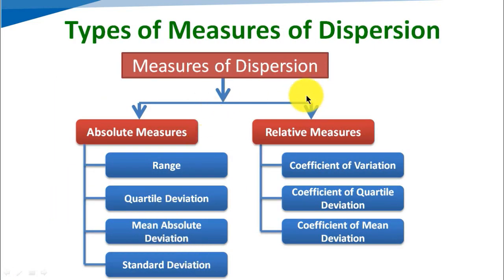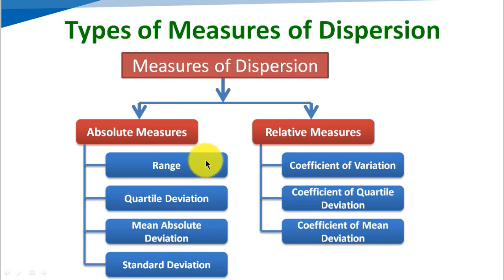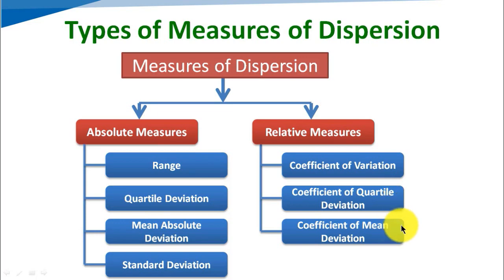Now, measure of dispersion can be divided into two types: absolute measures and relative measures. Absolute measures include range, qualitative deviation, mean absolute deviation, and standard deviation. Relative measures include coefficient of variation, coefficient of qualitative deviation, and coefficient of mean deviation. The relative measure is derived on the basis of absolute measure and will not have any unit.